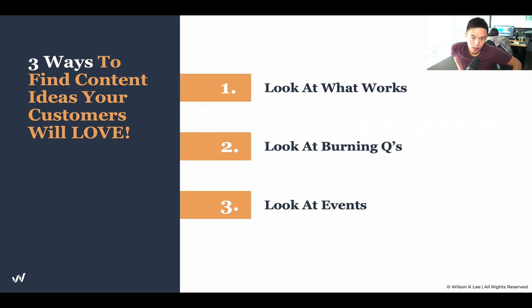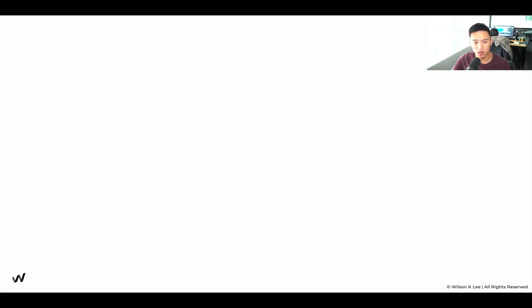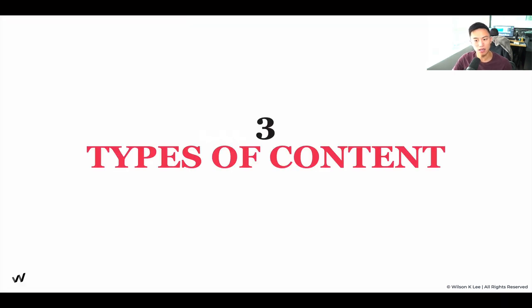To summarize, we talked about the three ways to find content ideas that your customers will love: look at what is working from your competitors, look at burning questions people are asking online, and look at events — national or local. These are ways for you to creatively communicate with your customers. Now we're going to talk about the three types of content you should be posting on social media.